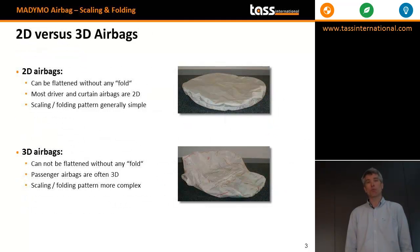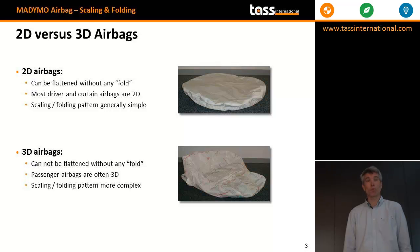Generally speaking, there are two types of airbags: 2D and 3D. The top one is an example of a 2D airbag — it's a driver airbag. If you put it on the ground, you can flatten it without any fault. Those are simple for scaling as well as folding. 3D airbags are much more complicated, because if you put one on the ground, you're not able to flatten it without having at least one fault. So those are very complex to fold.